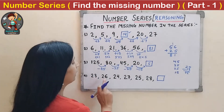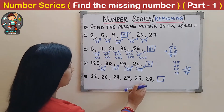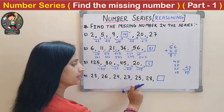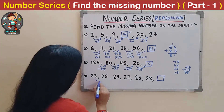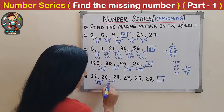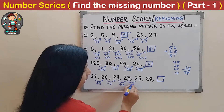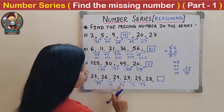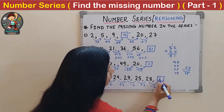Fourth question: 23, 26, 24, 27, 25, 28, _. The numbers alternate: increasing, then decreasing, then increasing again. The pattern is +3, −2, +3, −2, +3, and next will be −2. So 28 − 2 = 26. The missing number is 26.